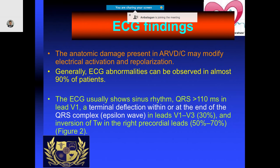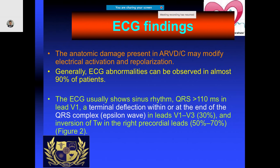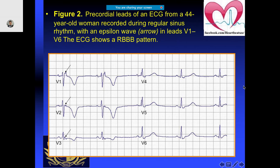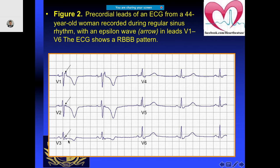Not all patients will show all ECG findings. Epsilon waves in V1 to V3 are visible in about one-third of patients. T-wave inversion in the right precordial leads is seen in at least 50 percent of patients, and the QRS will be wider. On this classical ECG, in leads V1 to V4 you can notice the characteristic epsilon wave, and in leads V1 to V3 you see T-wave inversion as well. There is right bundle branch block, and the epsilon wave has been marked here — do not forget these waves.